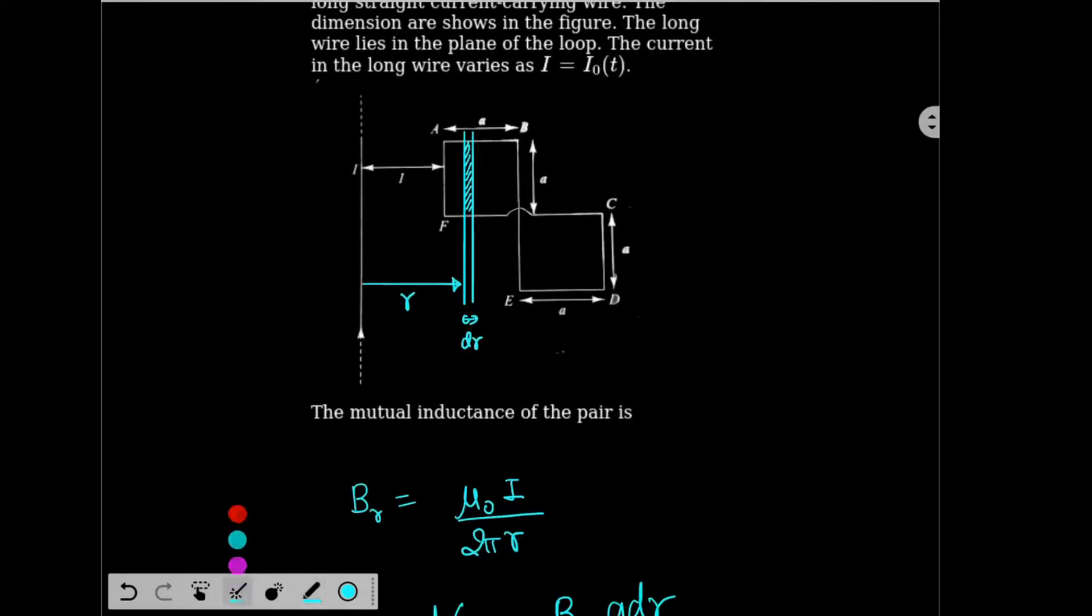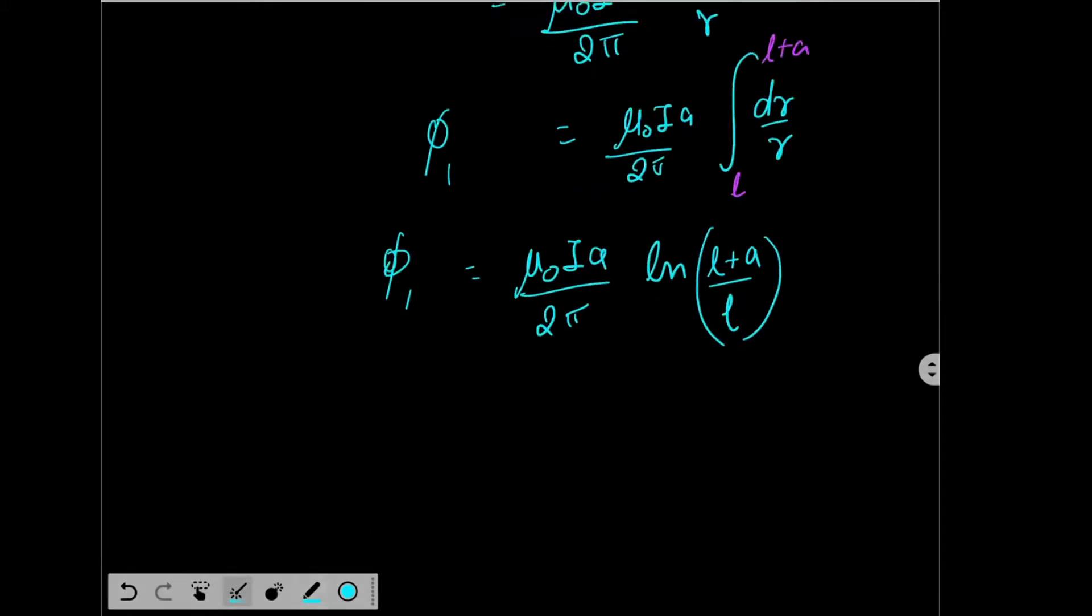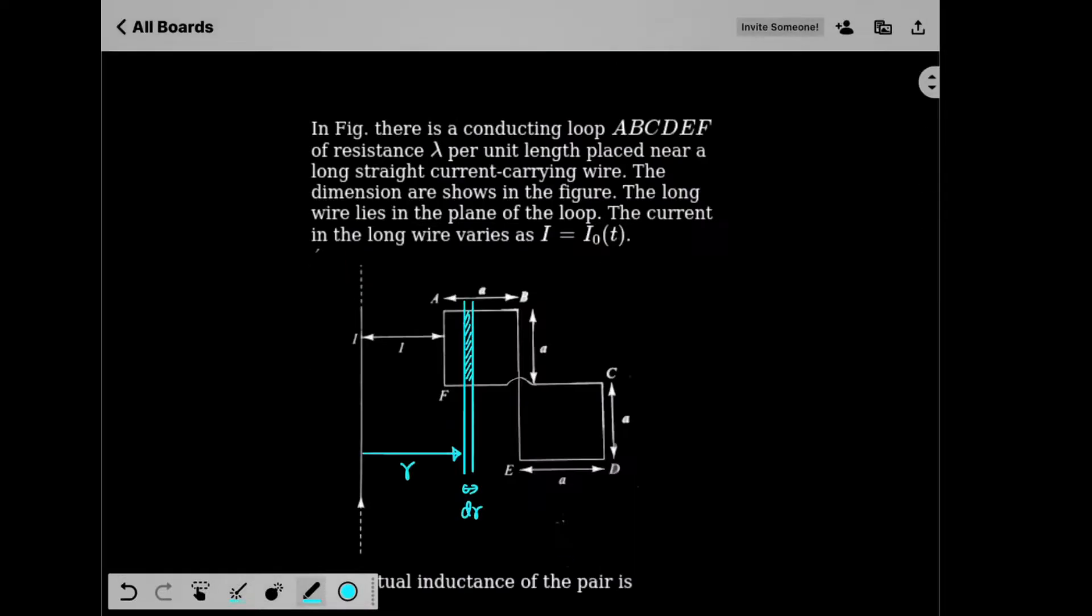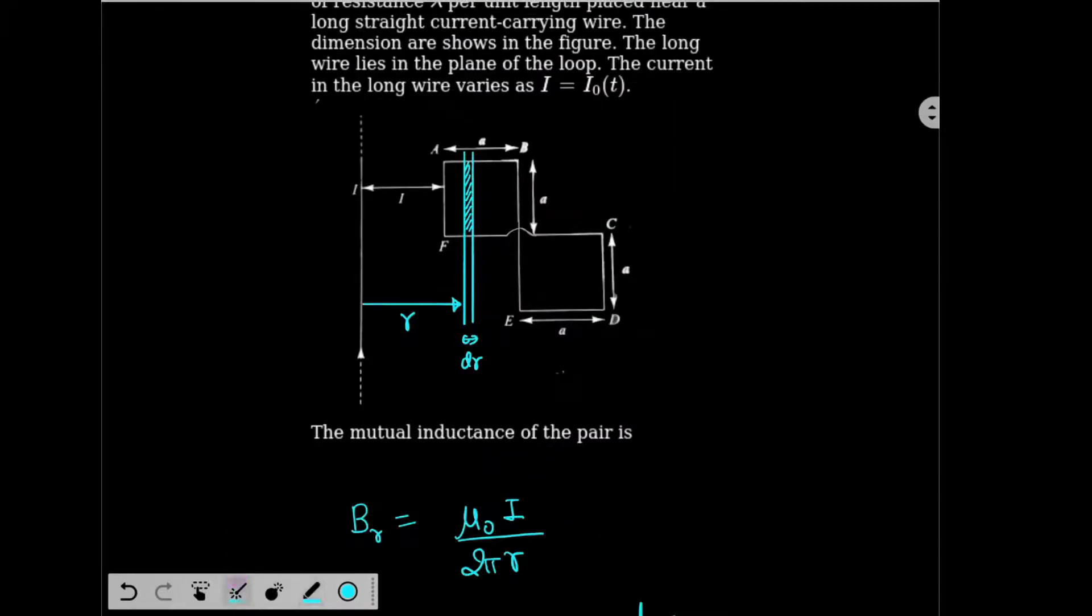Similarly, I can find the flux through the second square. So for that I just need to change the limits from L plus A to L plus 2A. So I can easily write down phi 2 will be having flux Mu0 IA by 2 pi log, the numerator will be L plus 2A, the denominator will be L plus A. So I found the flux through the two loops, but now there is only one problem.